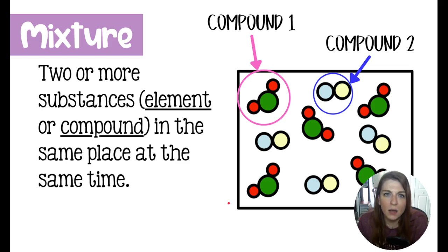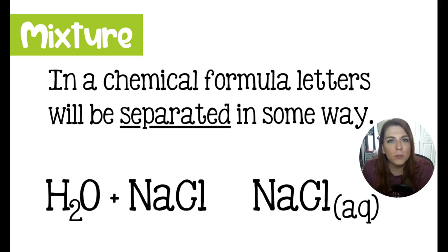A mixture is a combination of elements and compounds in the same place at the same time. So here is an example of a mixture. We have compound one, which is the green and reds, and then we have compound two, which is this very light blue and very light yellow. This is a mixture of two compounds. The chemical formula of a mixture will be indicated in a few different ways.